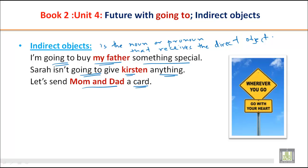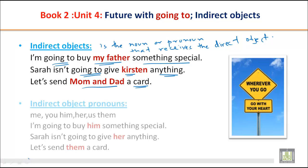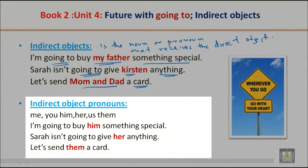Now let's look at indirect object pronouns: me, you, him, her, us, them. So instead of 'my father' you can say 'I'm going to buy him something special.' 'Sarah isn't going to give her anything.' 'Let's send them a card.' These are indirect object pronouns.